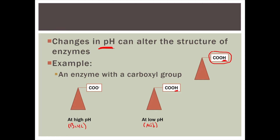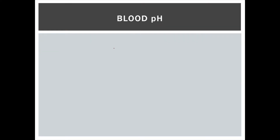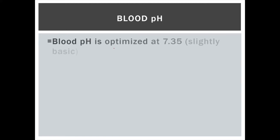One of the most important examples for us is blood pH. Blood pH is optimized at a pH slightly above 7 — blood works best at around pH 7.3.